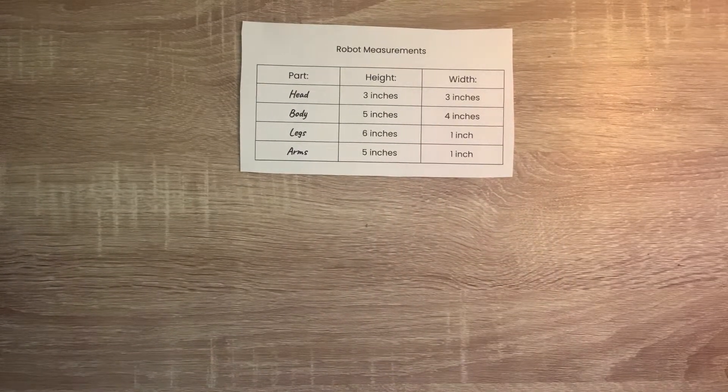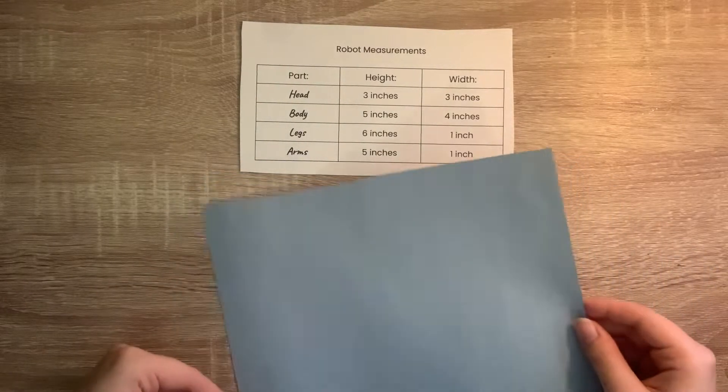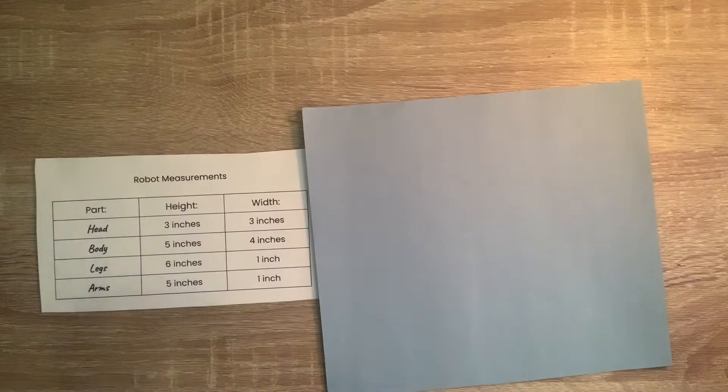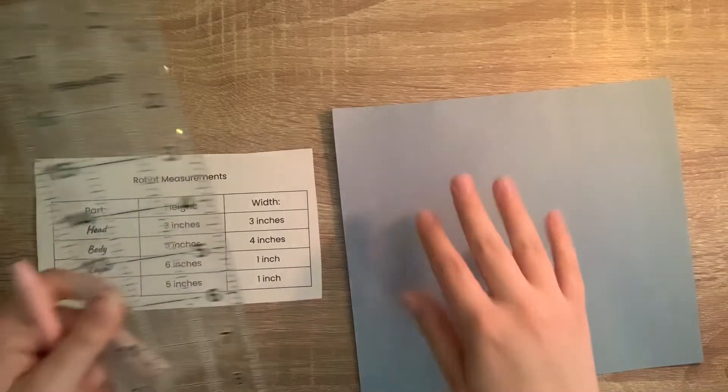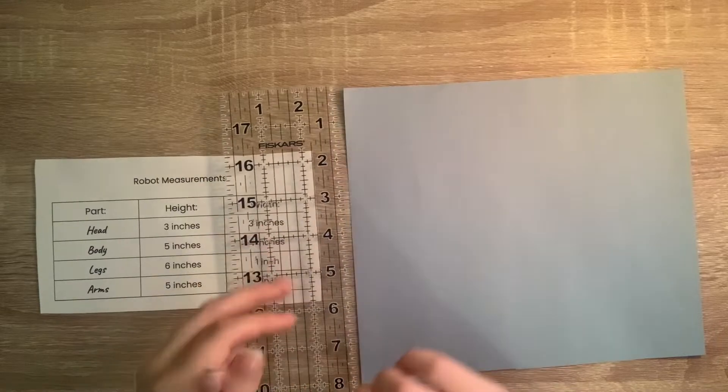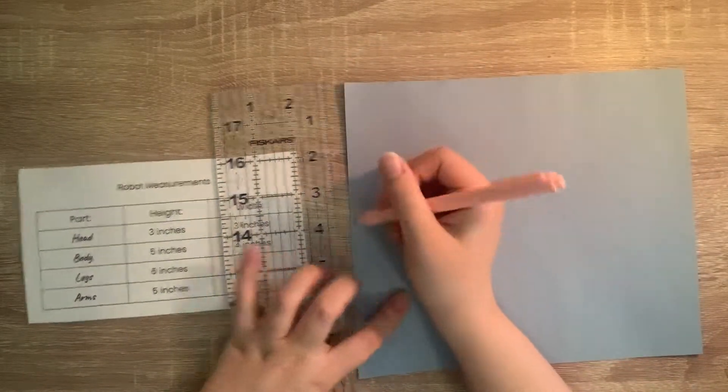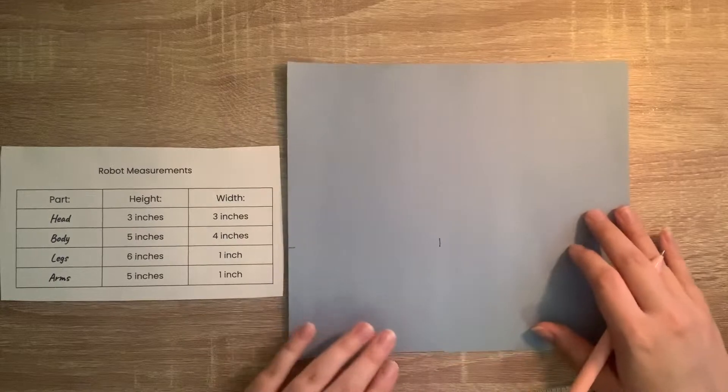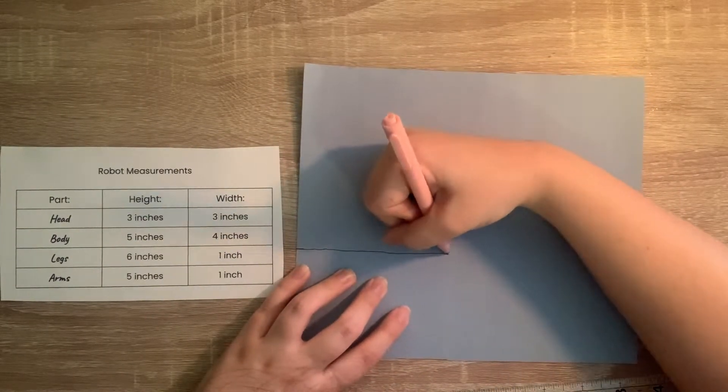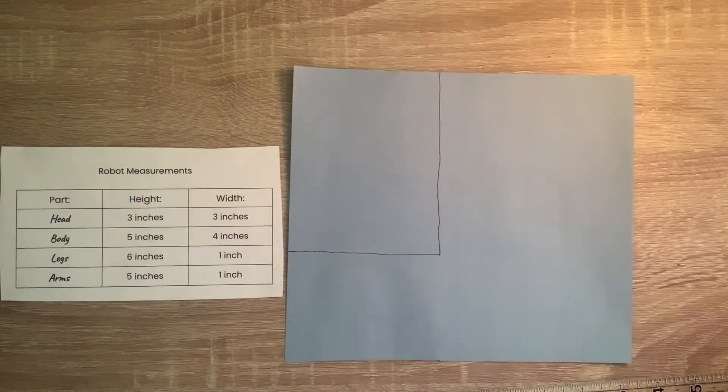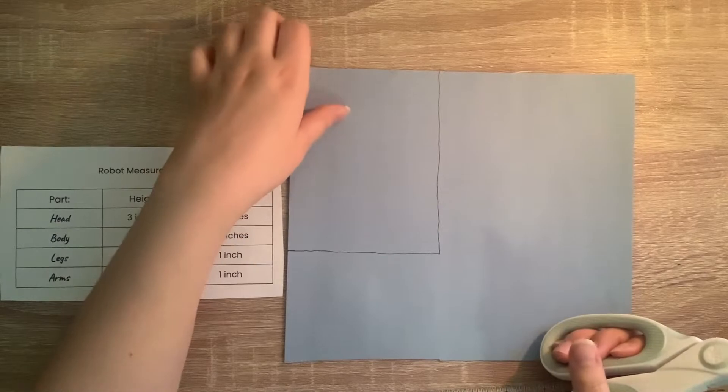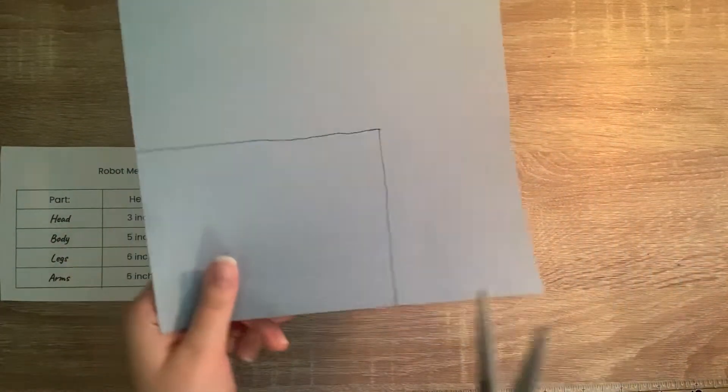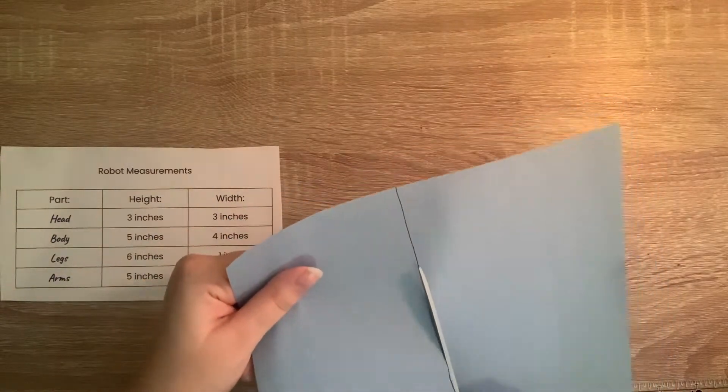Take out a sheet of construction paper. We are first going to create the body. It is 5 inches tall and 4 inches wide. Then take out your ruler. First, let's do the height. It says that it is 5 inches tall. I'm going to lay this right here and mark it at 5 inches. Now we need to mark 4 inches wide. Now we will connect these dots. After you have it marked, go ahead and cut it out. Make sure to ask an adult for help and use the scissors safely. Here is the body. Set it to the side for later.